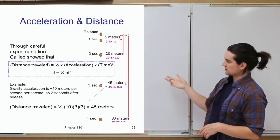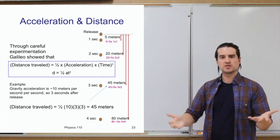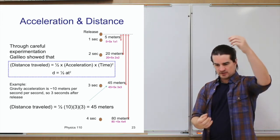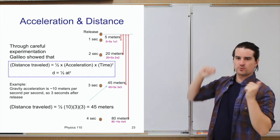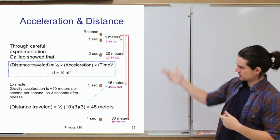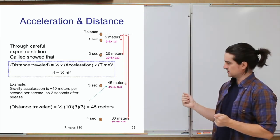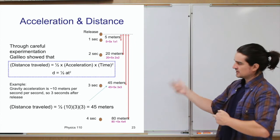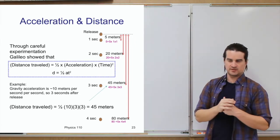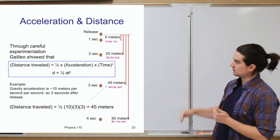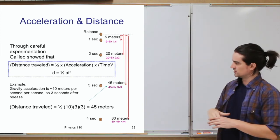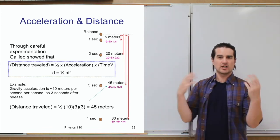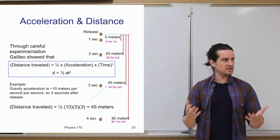To verify: an object accelerated at 10 m/s² falling for three seconds — plug into the equation: ½ × 10 × 3² = ½ × 10 × 9 = 45 meters. Put in four seconds and you get 80 meters; one second gives five meters. So through painstaking experimentation, Galileo came up with this theory of how an object moves when being accelerated at a constant rate — perhaps the first big example of the scientific process in action.